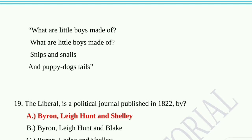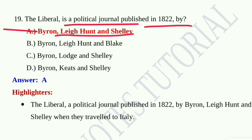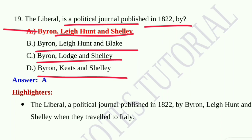Southey's most enduring contribution to literary history is the children's classic The Story of the Three Bears — the original Goldilocks story — first published in his prose collection The Doctor. With S.T. Coleridge, he wrote The Fall of Robespierre in 1794. Southey's notable fairy tale is Goldilocks and the Three Bears. Question number nineteen: The Liberal is a political journal published in 1822 by option A, Byron, Leigh Hunt and Shelley; option B, Byron, Leigh Hunt and Blake; option C, Byron, Lodge and Shelley; option D, Byron, Keats and Shelley. Option A, Byron, Leigh Hunt and Shelley, is the correct answer — published when they travelled to Italy.